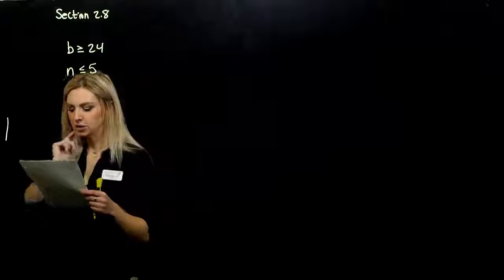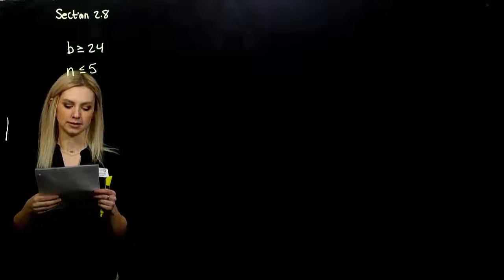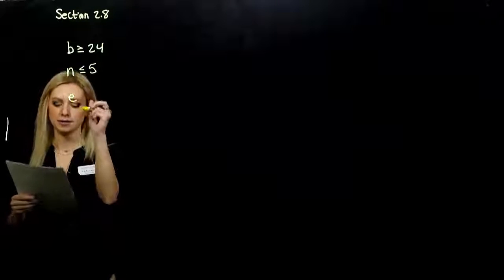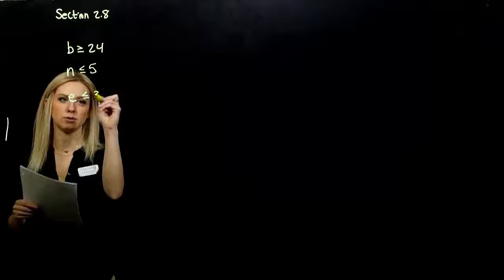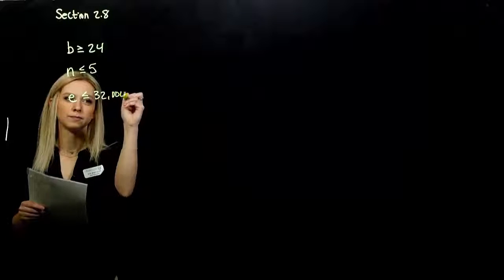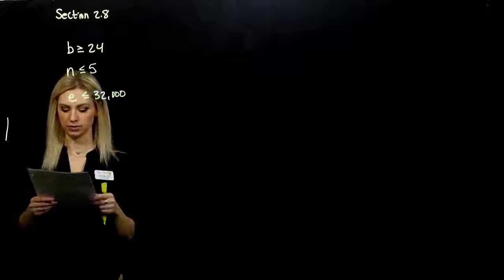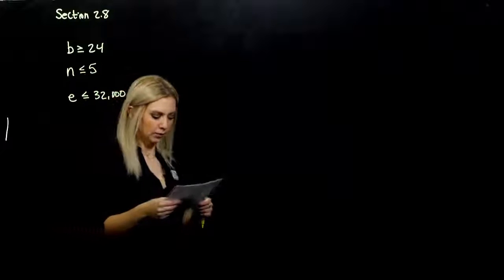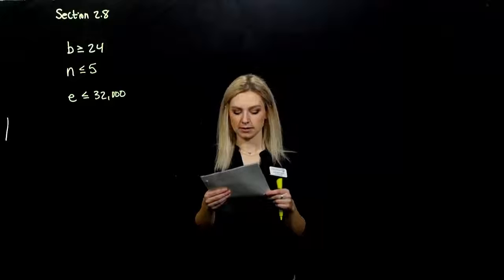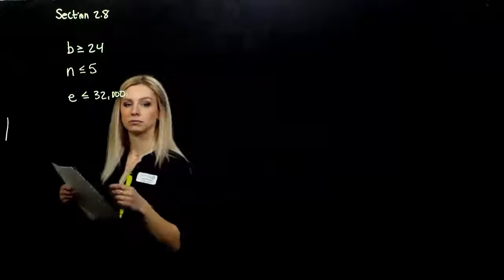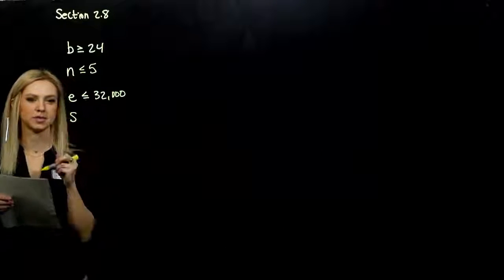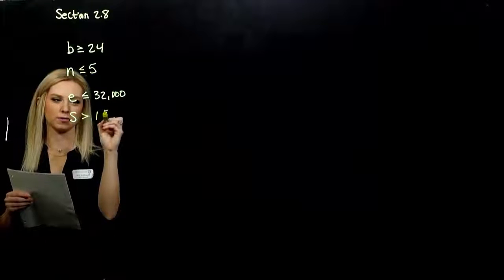Cannot exceed. To qualify, earnings cannot exceed $32,000. So if earnings are E, it has to be less than or equal to 32,000. I cannot exceed. I can't go any higher, but I could be equal to 32,000. What about must exceed? The speed must exceed 15 miles per hour. I'm going to say S is my speed, it has to be greater than 15.